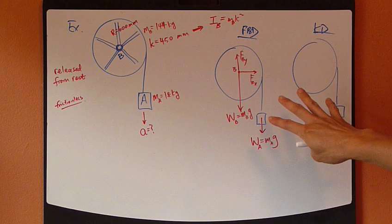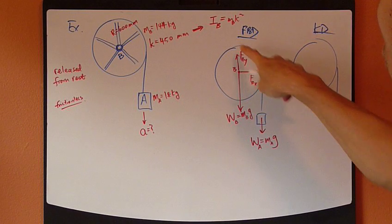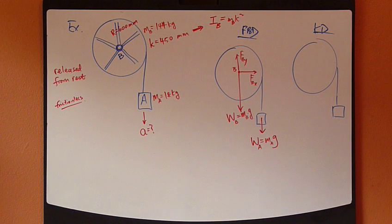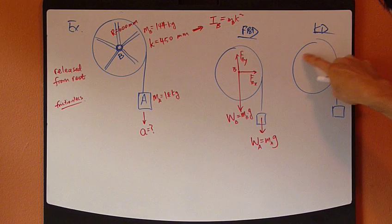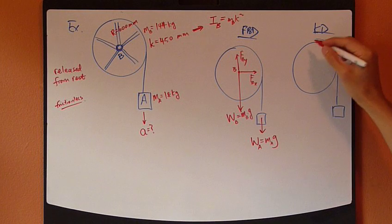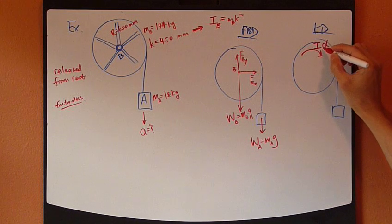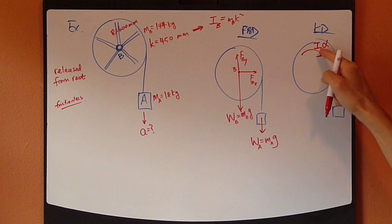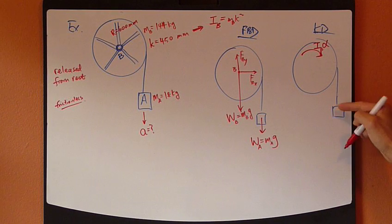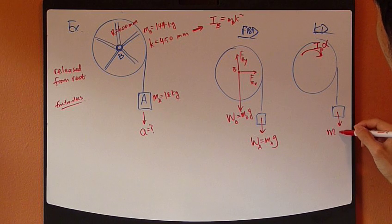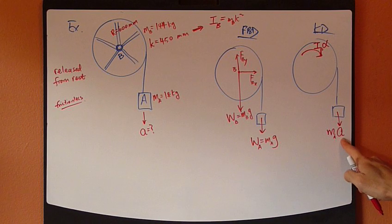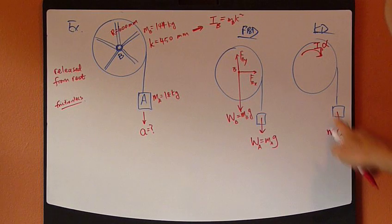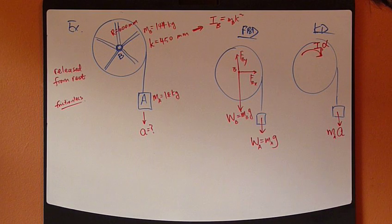We have the forces and the weights and the two reaction forces — that's all there is acting on this entire system. Moving on to the kinetic diagram, which shows the acceleration terms: for this wheel, which is purely rotating about point B, I only have I_B times alpha. For this load, I have m_A times acceleration, which is the unknown.